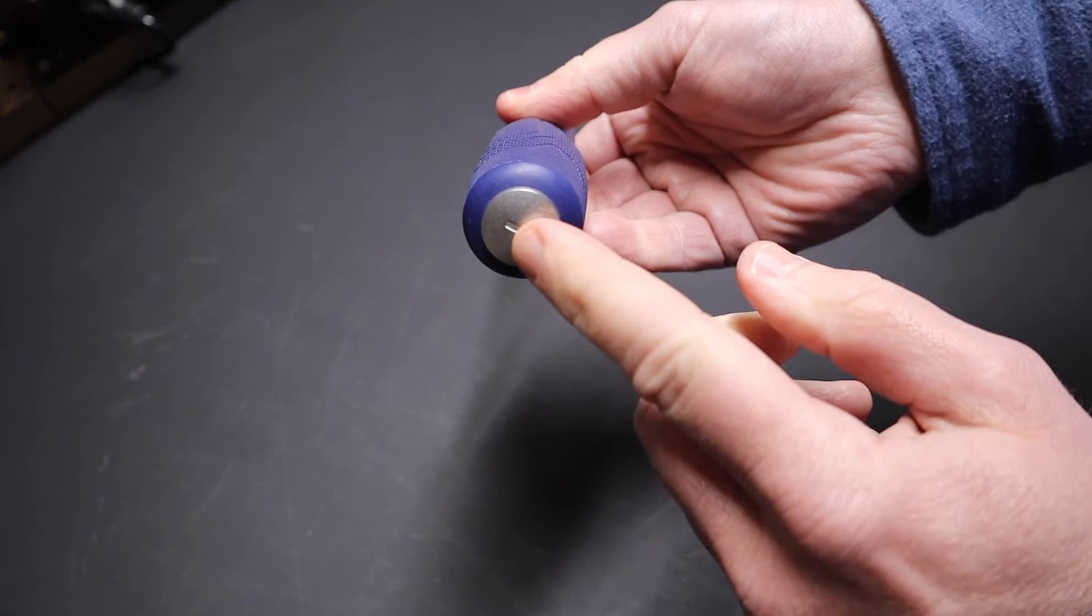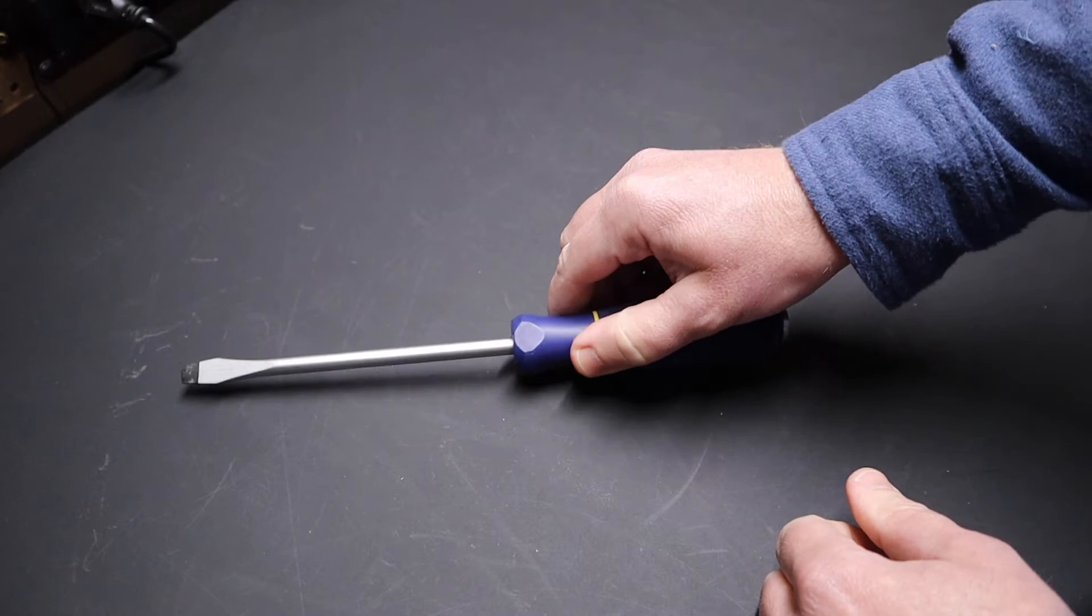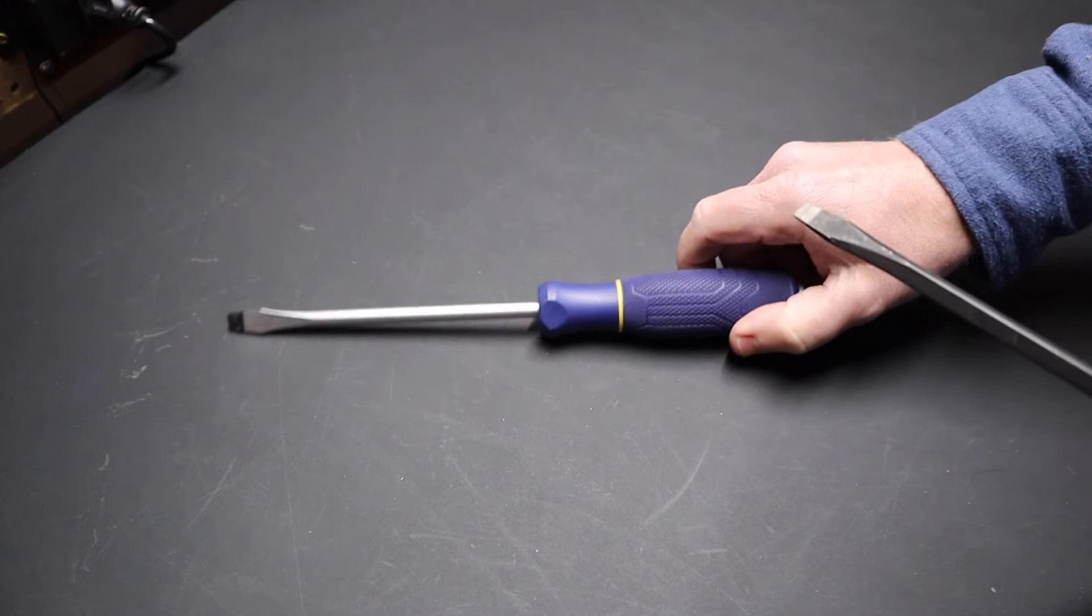Milwaukee actually had this, but DeWalt didn't have it on theirs, nor did Klein, but of course Irwin did. Now the other thing I wanted was a round shaft. What I didn't want was a hex shaft like this one here.